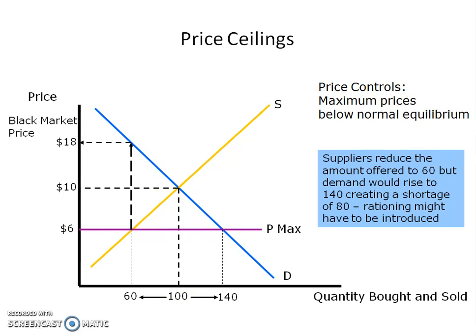If the government steps in and says $1,000 is too much for the average family to afford, so we're going to set the price at $600, the result would be that only 600 apartments would be provided, whereas 1,400 would be demanded. So the result of this would be a black market where people would be subletting their apartments — not for $600, but all the way up to $1,800.